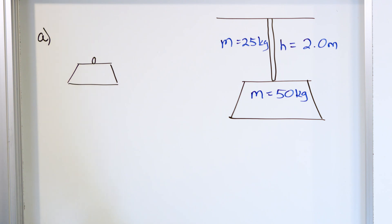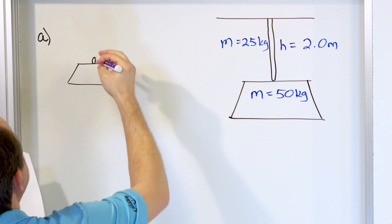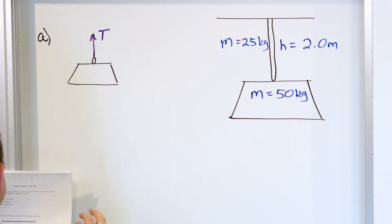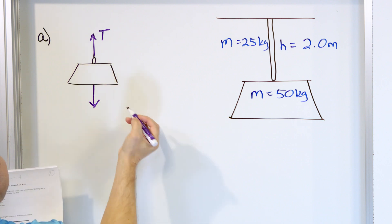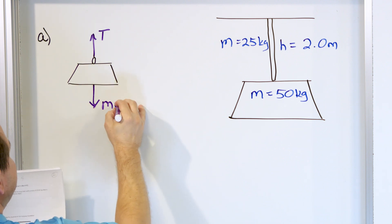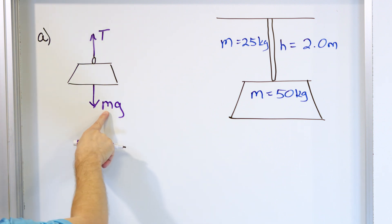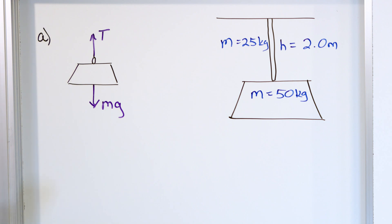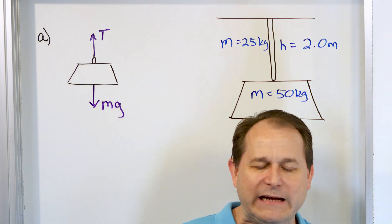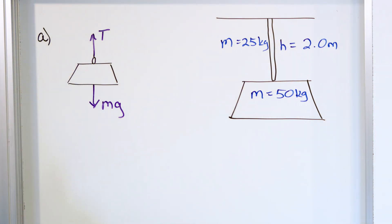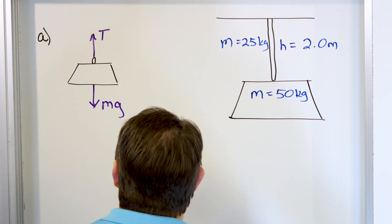That is probably the only little trick to this problem. So the chain link is experiencing some tension acting upward, and the chandelier has a weight of mg acting downward. We have to write Newton's second law, which governs this situation.